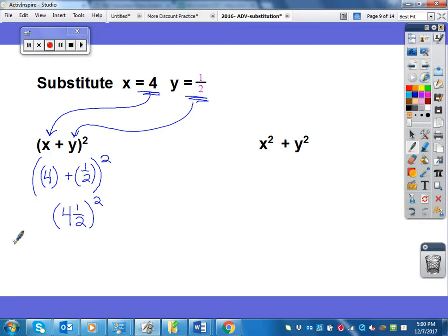Well, to square that, that means I need to multiply it by itself. So now I have to remember, how do you multiply a mixed number? Well, I know that to multiply a mixed number, I need to do 9 over 2 times 9 over 2.